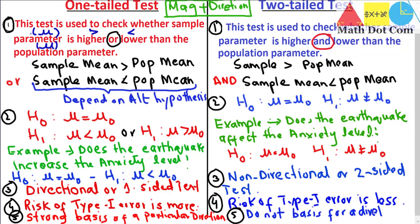In the case of a two-tailed test, we do not need a strong basis for a particular direction because we have the option of finding significance in both directions. It is conventional to use a two-tailed test because of the ever-present possibility of unexpected results. For example, if you are testing in the 'greater than' direction but your results match the 'less than' condition, it becomes difficult to proceed with that hypothesis. That is why we use the two-tailed test to rule out the possibility of any unexpected result.